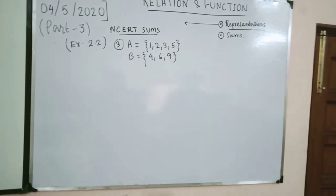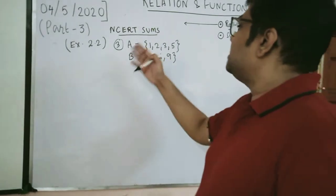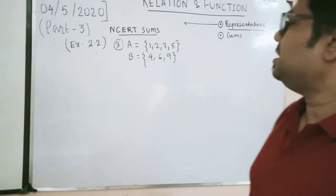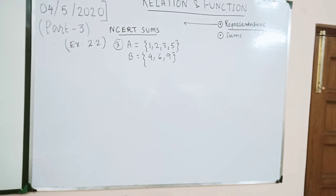Now we'll do a few sums on relations. This is sum number 3 from NCERT Exercise 2.2. Two sets are given: A = {1, 2, 3, 5} and B = {4, 6, 9}. They ask us to define a relation R from A to B such that the difference between x and y is odd.